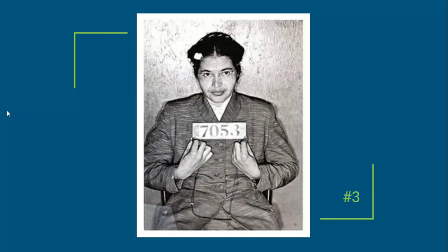They begin with Rosa Parks, who in December of 1955 challenged segregation laws in Birmingham, Alabama, when she refused to give up her seat to a white passenger on a bus. She just said, 'I'm not going to do that today.' She ended up being arrested, but her arrest actually sparked a bus boycott that brought Martin Luther King to national prominence as he came to lead this boycott in the wake of Rosa Parks being arrested.